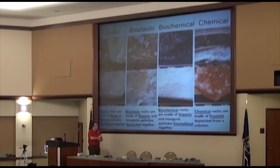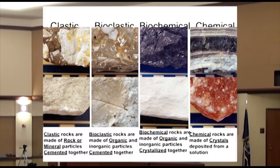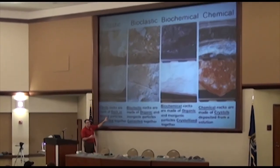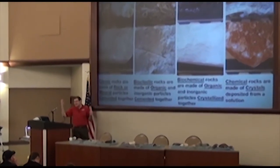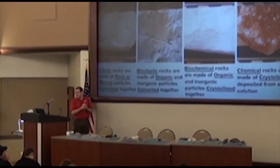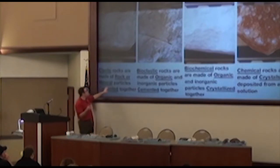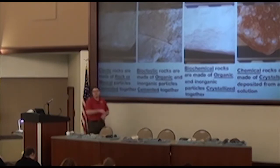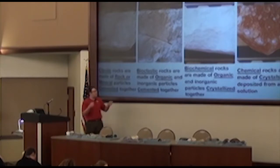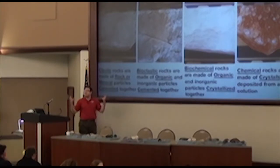Most sedimentary rocks are what we think of as clastic rocks. A clast is like a piece of something, so clastic means it's a bunch of pieces together. Clastic rocks are made of little pieces of rocks or minerals stuck together. Can somebody tell me one of the rocks in your kit that might be clastic? Conglomerate — that's an excellent example. You look at your conglomerate and see little pebbles, little clasts, all stuck together.